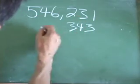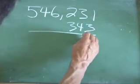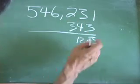So we put the 343 right here. And then we multiply. 3 times 1 is 3. 3 times 4 is 12. 2 times 3 is 6.